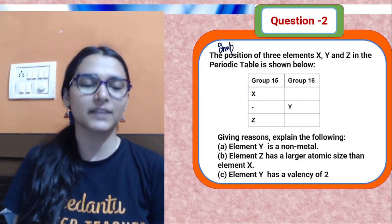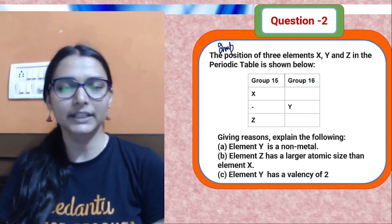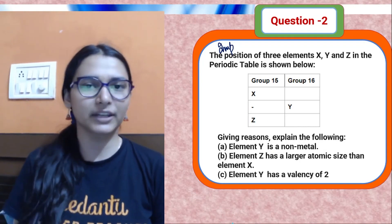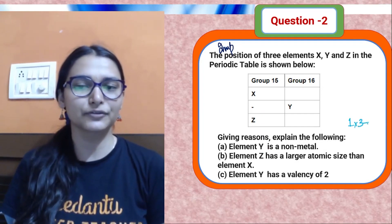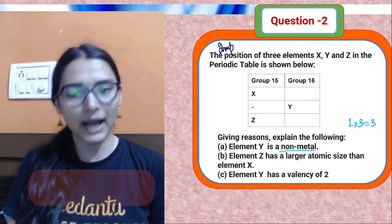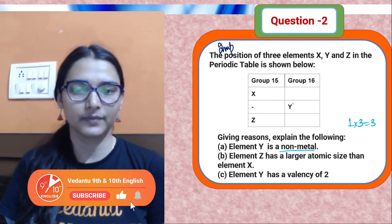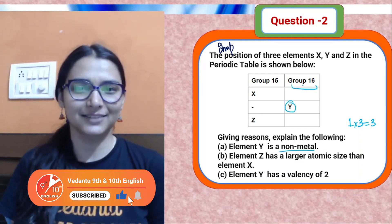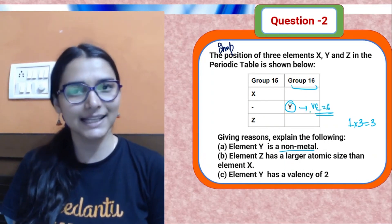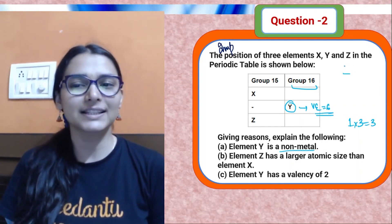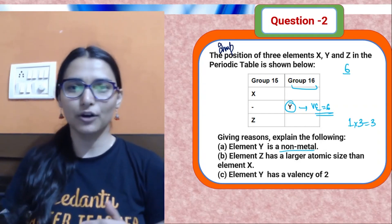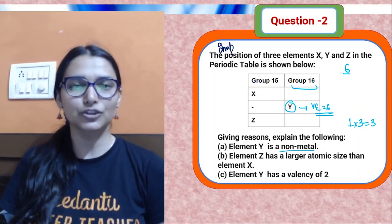Second question: the positions of three elements X, Y, and Z are given in the periodic table. These kinds of questions are most expected in the exam. There are three parts, each carrying one mark, totaling three marks. Part one: element Y is a non-metal — give the explanation. Y is in group 16, meaning it has six valence electrons.